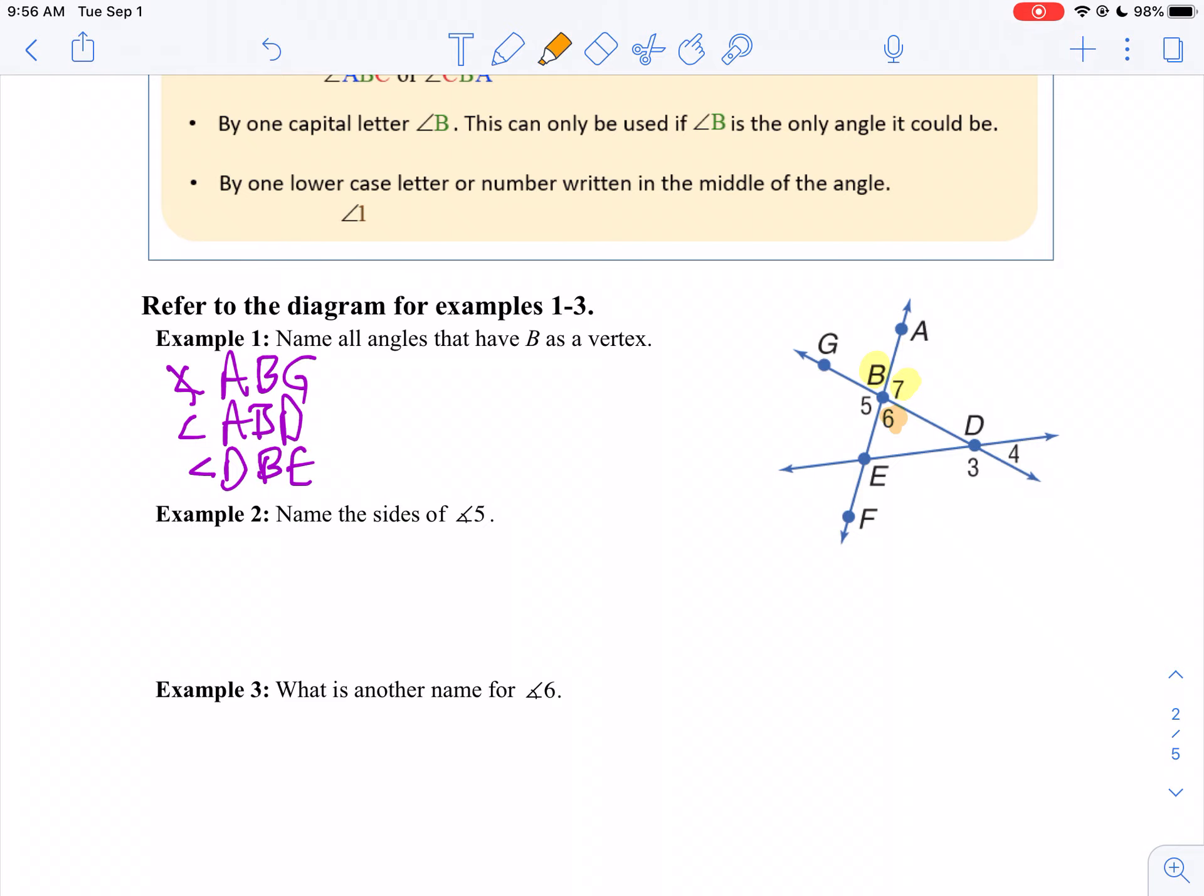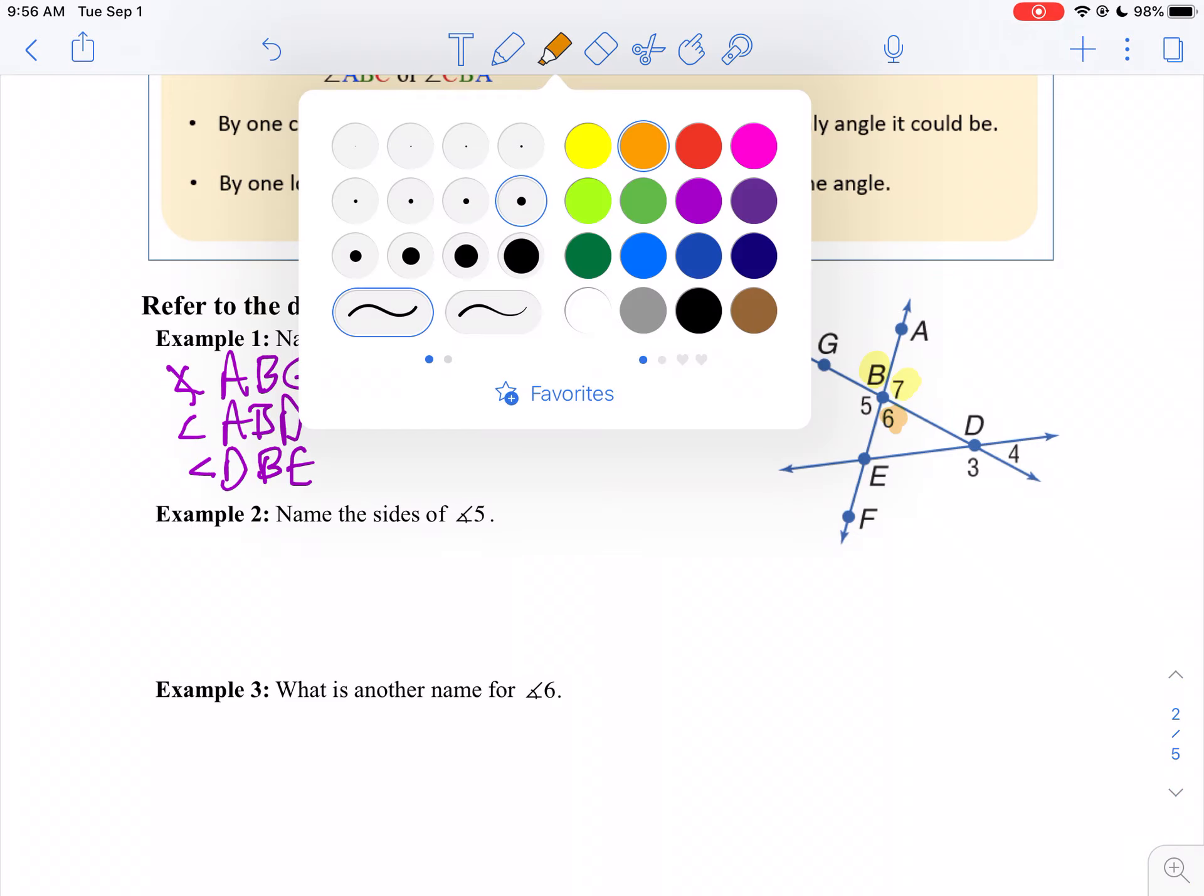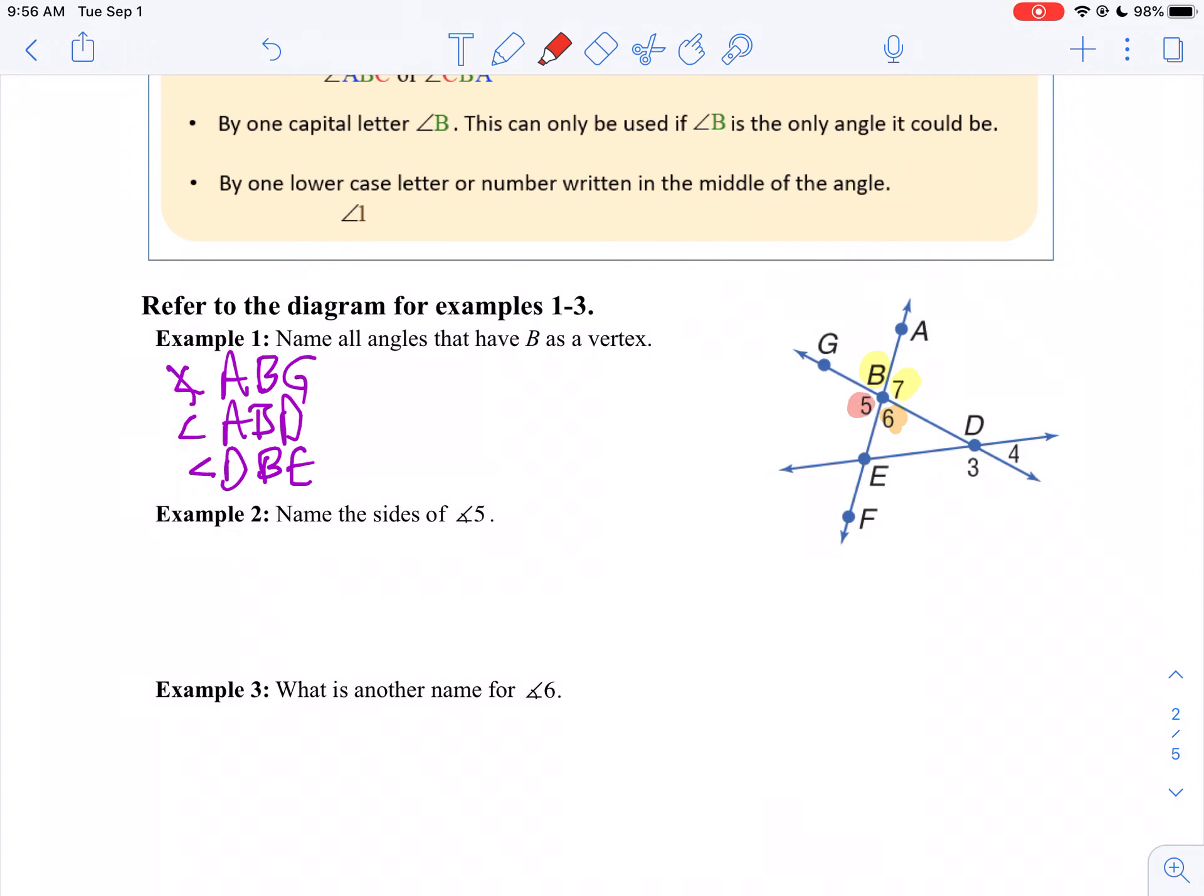And finally, the last one with angle B as a vertex is angle 5, which we're going to name with three letters. Angle G to B to E. So angle G, B, and E.